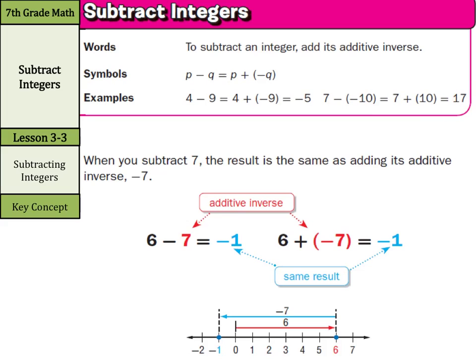When you subtract seven, the result is the same as adding its additive inverse, negative seven. So six minus seven is the same thing as six plus negative seven. We keep the first number, change the sign from subtraction to addition, and the additive inverse of positive seven is negative seven. Six minus seven equals negative one, and six plus negative seven equals negative one — same result.